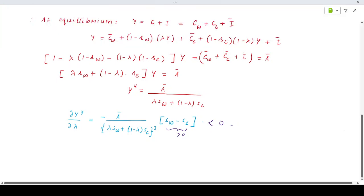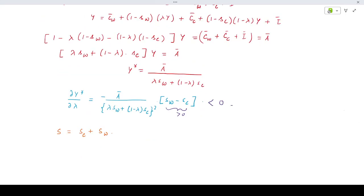Next, we want to find the effect on aggregate savings. What is aggregate savings? Savings of the workers plus savings of the capitalists. That would be SW bar plus SW times lambda Y plus SC bar plus small SC times 1 minus lambda times Y.